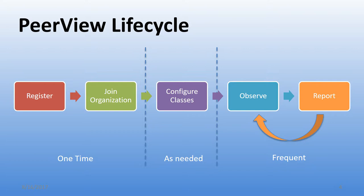After joining the organization, your duty as a Peer Observer is to set up your own classes to be observed. This configuration consists of entering the classes into the system — we tend to include the period in the class name so observers can easily identify what they're seeing. There's also an option for teachers to create targeted questions they'd like their Peer Observer to answer.